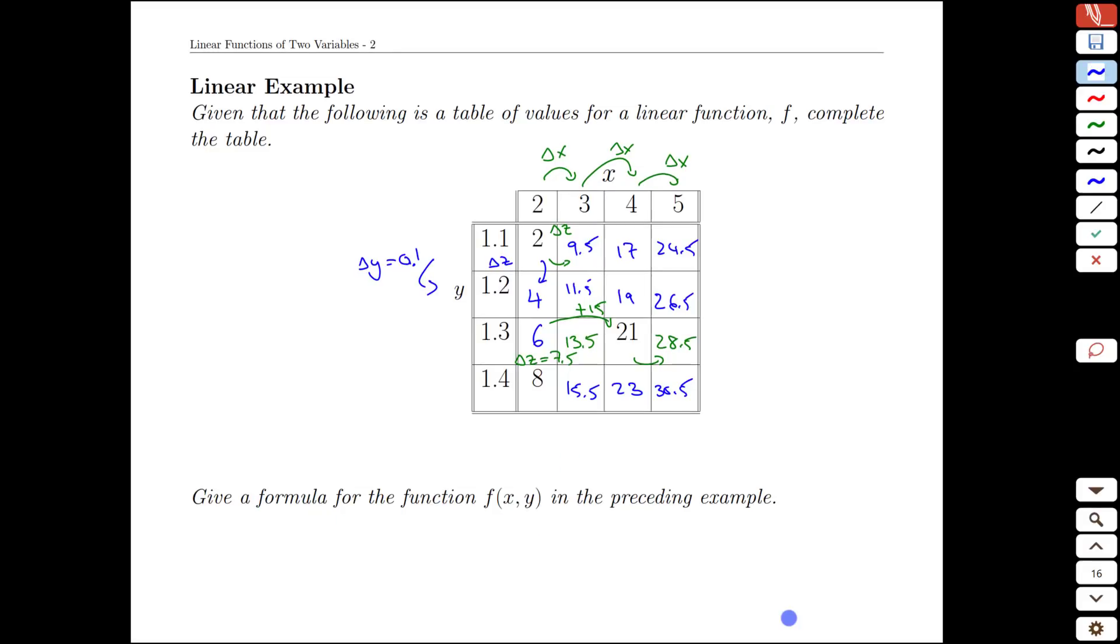Now once we have this table of values we can also go back and extract the formula for the function itself. What we need are the two slopes. So the x slope would be the change in z over the change in x, and we said that every time we skip to the right here we went up by 7.5, and the change in x was from 2 to 3 or 3 to 4, that was a change of x of 1, and so that slope is 7.5.